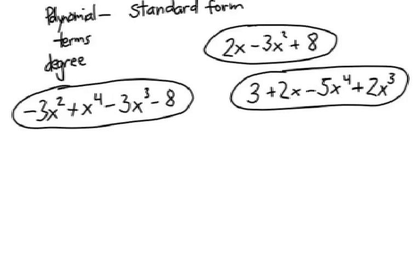This first polynomial has four terms. We have a negative 3x squared term, an x to the 4th term, a negative 3x to the 3rd term, and a negative 8.